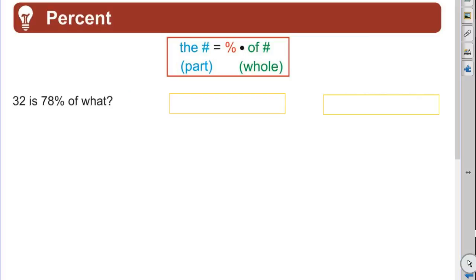All right, we've got a problem like this: 32 is 78 percent of what number? So first we're going to start with the formula, right. Number equals percent times the of number. Okay, we can see it says of what? My variable is the of number.